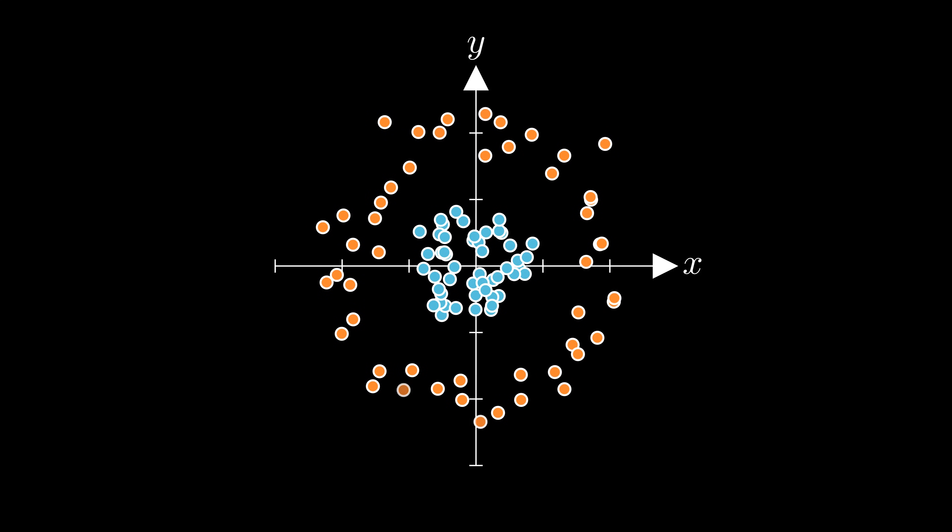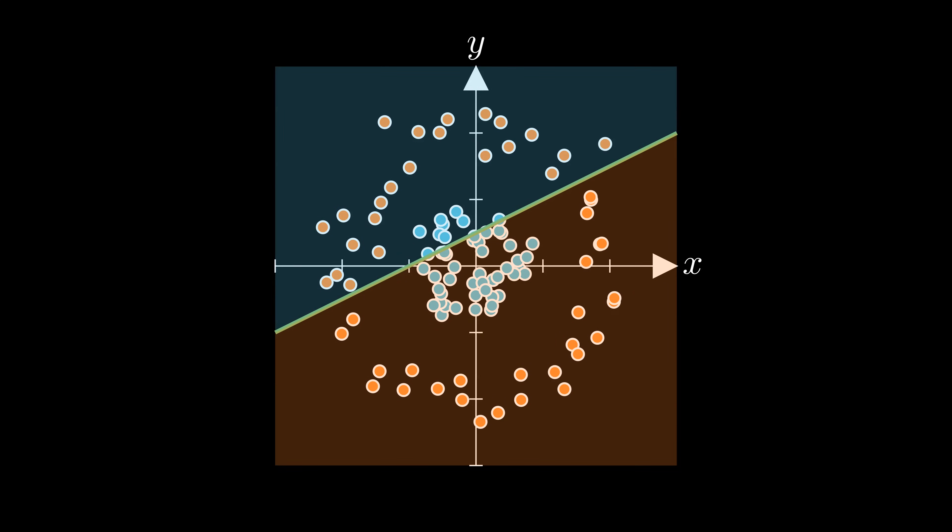Let's look at a simple example to see why features are important. Here we have data points from two groups, blue and orange. In this space, building a linear classifier to separate the two groups is very hard. No matter how we try, we can't find a good way to separate them.